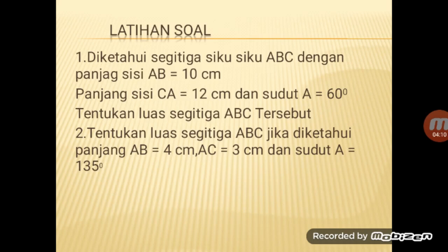Sebagai latihan, ada 2 soal. Pertama, segitiga ABC dengan panjang sisi AB sama dengan 10 cm, panjang sisi CA sama dengan 12 cm, dan sudut A itu sama dengan 60 derajat, tentukan luas segitiga tersebut. Kedua, tentukan luas segitiga ABC jika diketahui panjang AB sama dengan 4 cm, AC adalah 3 cm, dan sudut A sama dengan 130 derajat. Silahkan dirangkum dulu materinya di buku kalian masing-masing, setelah itu silahkan dikerjakan. Kalau ada pertanyaan, bisa kalian tanya guru pengampu, atau kalian bisa lihat di referensi-referensi lain.